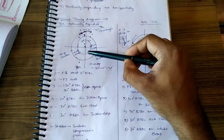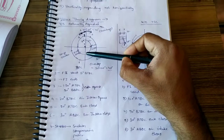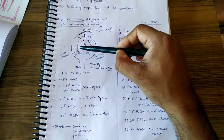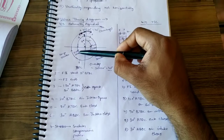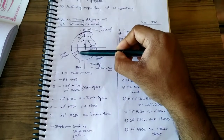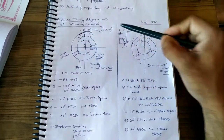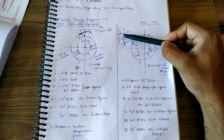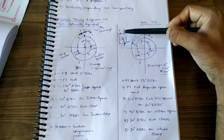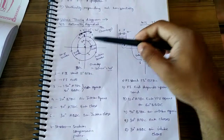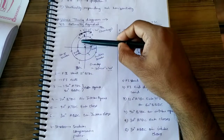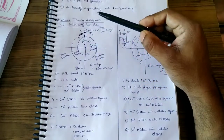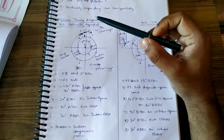Now the piston will be at BDC and will go up, completing the exhaust stroke. It goes up and removes the exhaust gases — the burned gases — which is also called scavenging. At point four, which is 20 degrees before TDC, the air intake — the suction valve — opens.